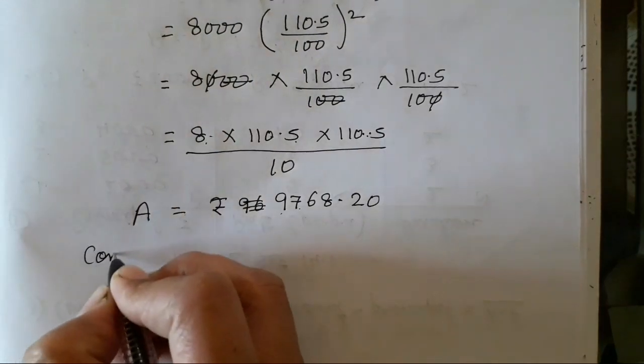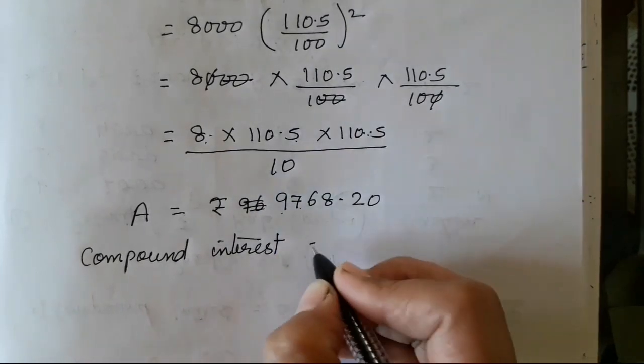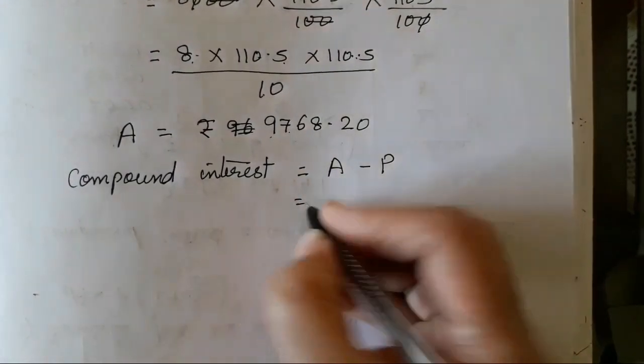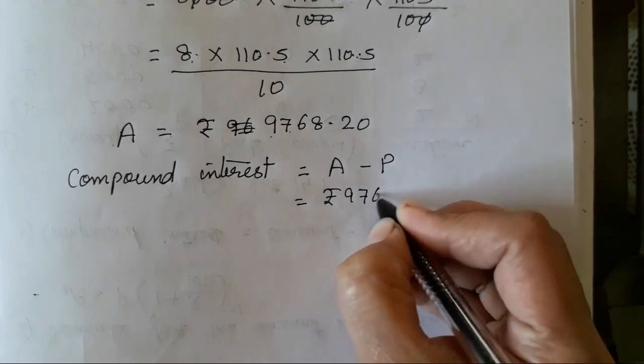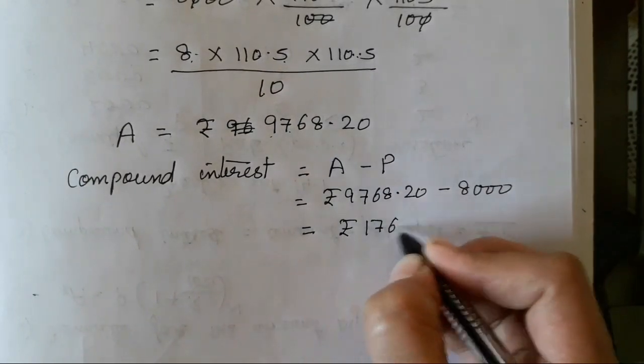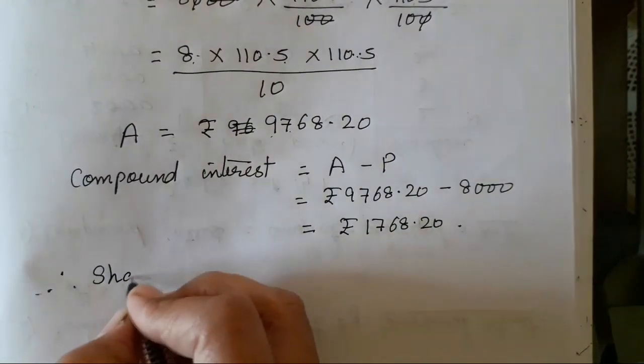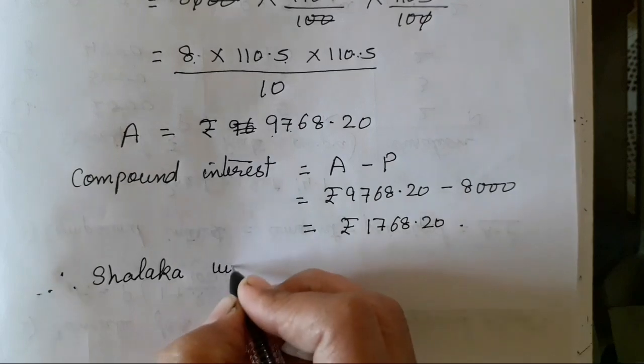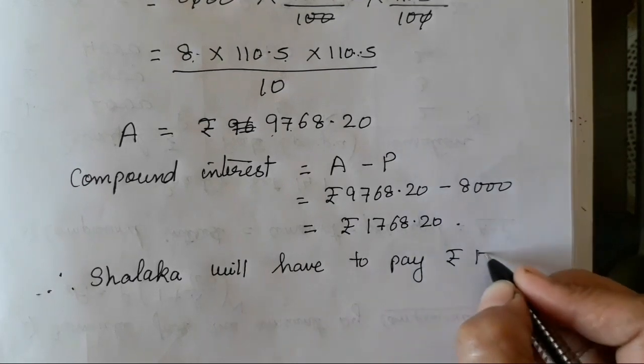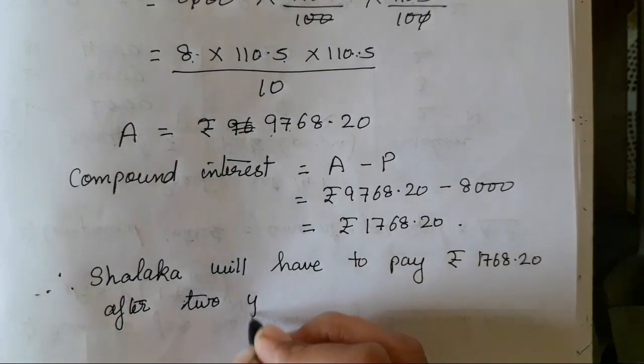Now we have to remove the compound interest. Compound interest, therefore it will be A minus P. Therefore A is ₹9,768.20 minus ₹8,000. It will give us ₹1,768.20. Therefore we will write the conclusion that is Shalaka will have to pay ₹1,768.20 after 2 years.